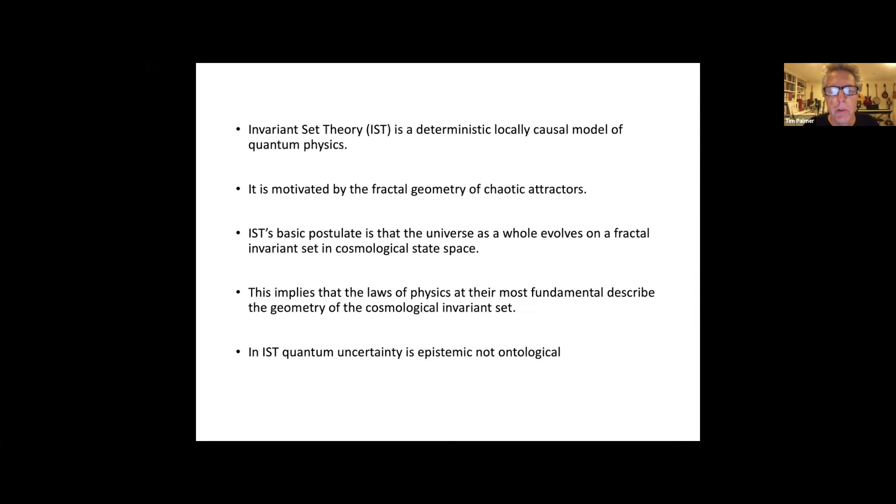What that implies is that the laws of physics at their most fundamental, if this idea is correct, somehow describe the geometry of this cosmological invariant set. As I'll talk about, what it leads to is a perspective on quantum uncertainty that's very much in the epistemic camp and not ontological. That is to say, uncertainty is our uncertainty about the world, not the world's uncertainty about itself.